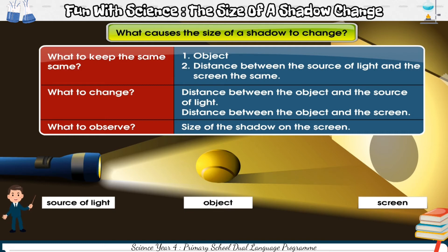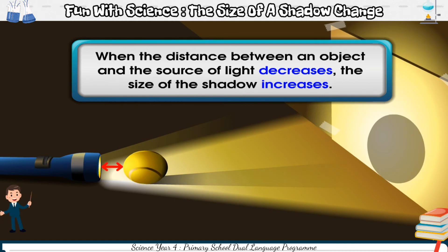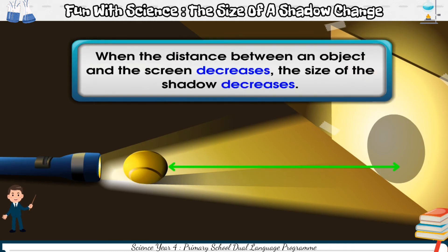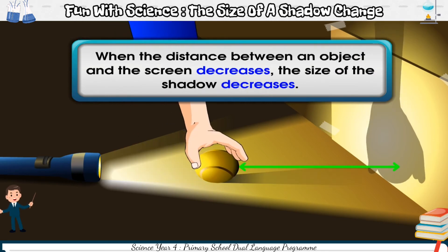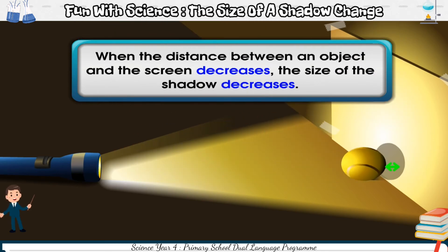From the test, we will find that when the distance between an object and the source of light decreases, the size of the shadow increases. When the distance between an object and the screen decreases, the size of the shadow decreases.